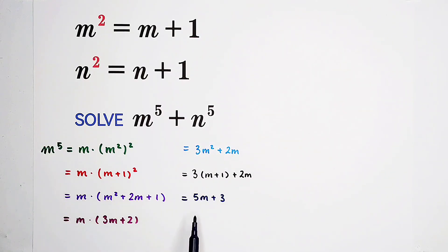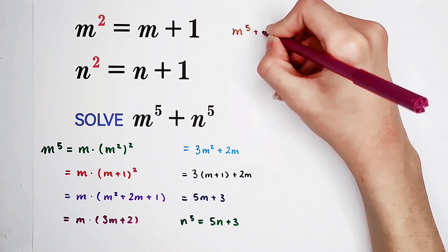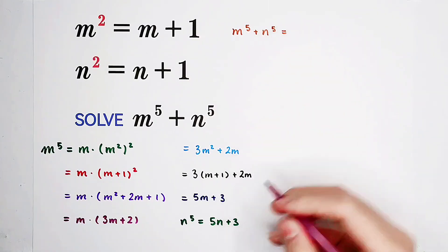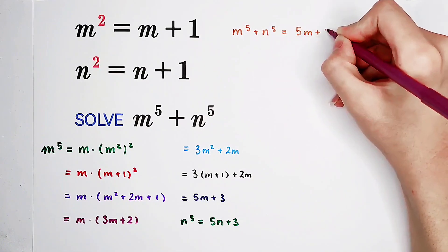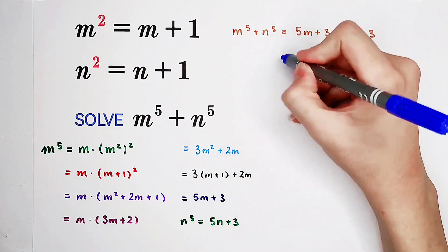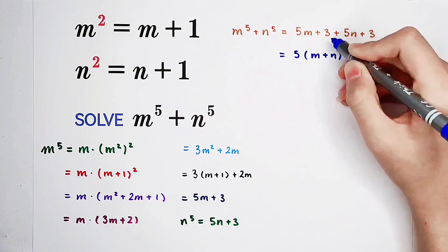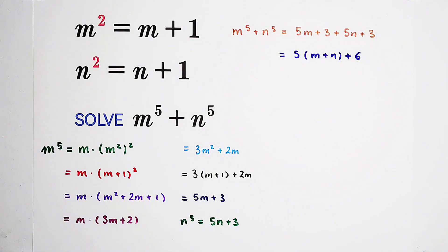Now m to the power 5 equals 5m plus 3. And n to the power 5 the same way, it is 5n plus 3. So now what shall we do? We should add these two together. m to the power 5 plus n to the power 5 is equal to 5m plus 3 plus 5n plus 3. And this is 5 times m plus n plus 6. So not very good.